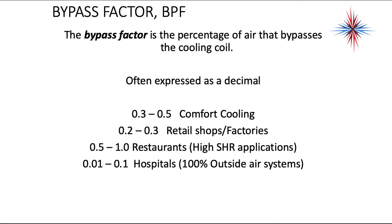We also have the bypass factor. The bypass factor, or BPF, is the percentage of air that bypasses the cooling coil, often expressed as a decimal. For comfort cooling it's between 0.3 and 0.5. For retail shops and factories it's 0.2 to 0.3. For restaurants it's 0.5 to 1.0. And for hospitals, which use 100% outside air, it's 0.01 to 0.1. Just a rule of thumb.